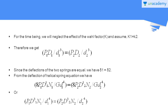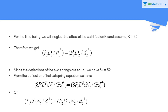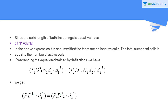Canceling the same terms, we get P₁D₁³n₁ / d₁⁴ equals P₂D₂³n₂ / d₂⁴. This relation is obtained by making the deflections equal. Since the solid length of both springs is equal, we have d₁n₁ equals d₂n₂, where n₁ and n₂ are the number of coils in spring 1 and spring 2.